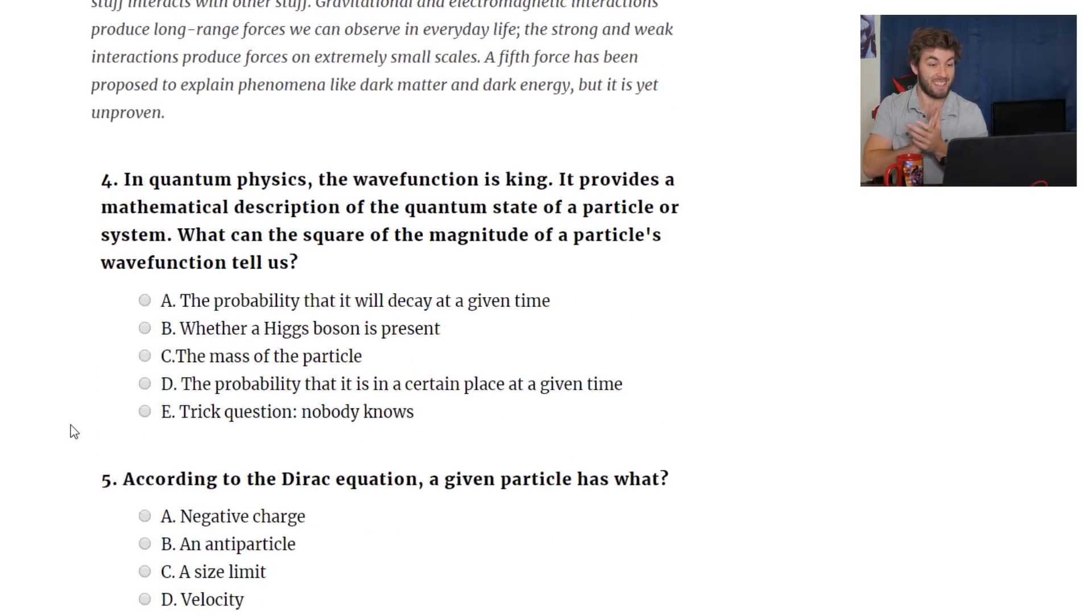In quantum physics, the wave function is king. It provides a mathematical description of the quantum state of a particle or a system. What can the square of the magnitude of the wave function tell us? The probability that a particle exists at a certain place. The probability that it will decay at a certain time. Whether a Higgs boson is present. The mass of a particle. The probability that it is in a certain place at a given time. I don't know if I said time, but whatever. Trick question, no one knows.